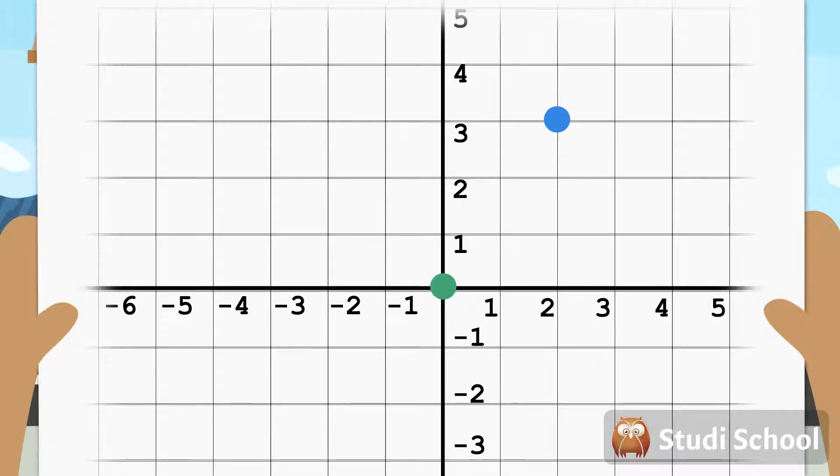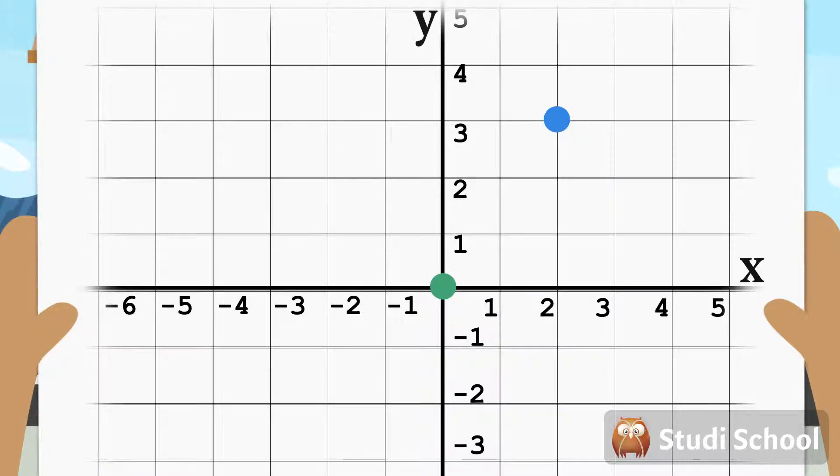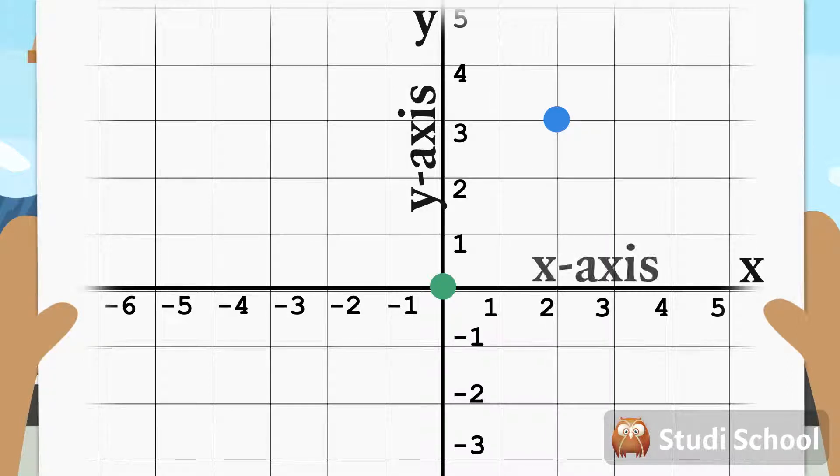We label each of these lines with X and Y. The vertical line is Y and the horizontal line is X. They are called the Y-axis and the X-axis.